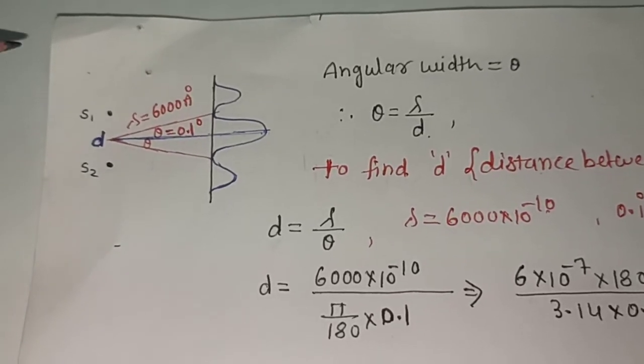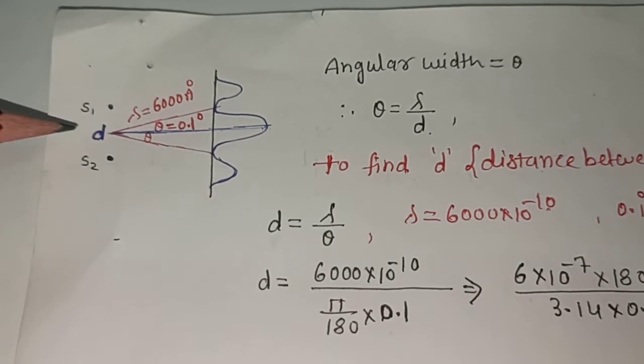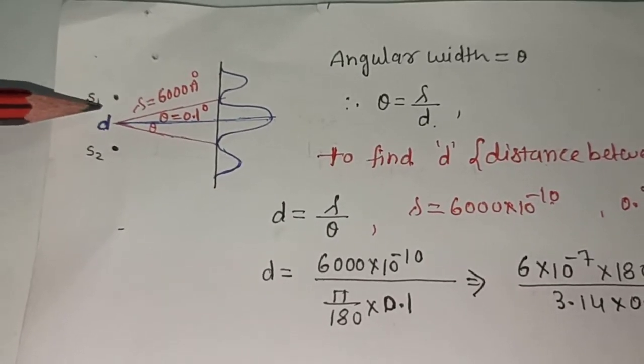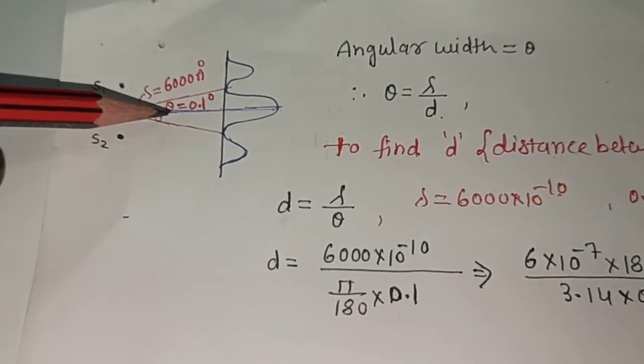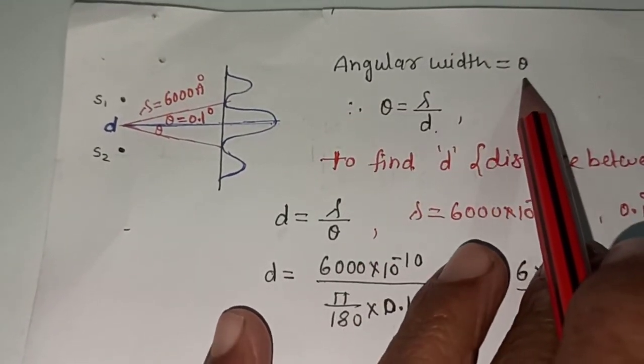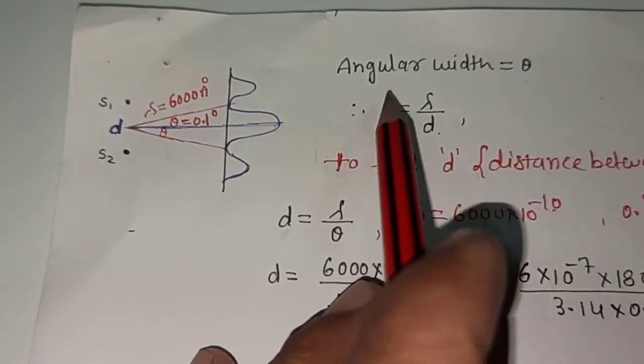In this question, we have given the Young double slit experiment and we have to calculate the distance between the two slits, which is denoted by small d. You can see that the angle is theta, and this theta angle is called the angular width, which is denoted by angle theta. And this is the formula of the angular width: lambda over d.